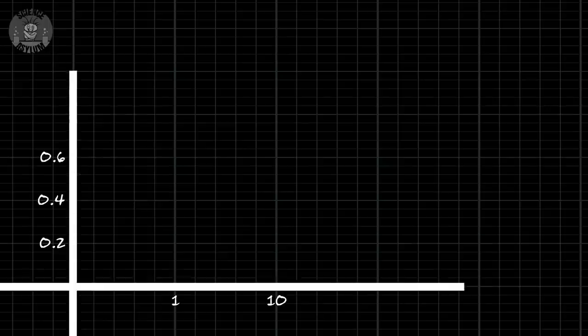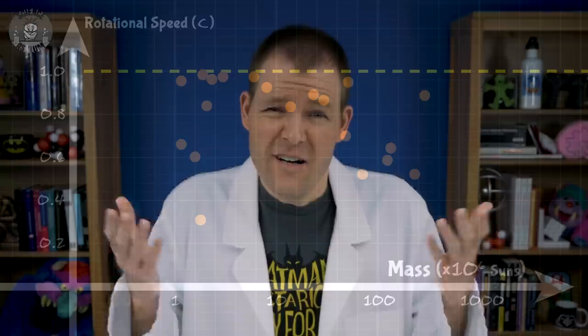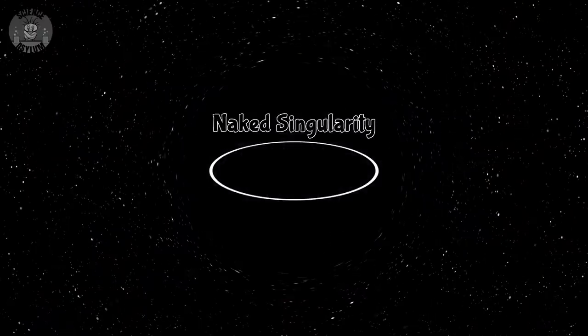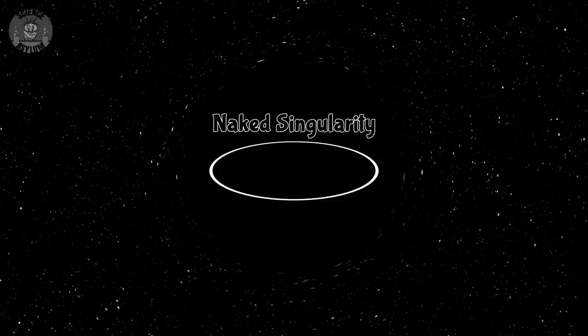There is an upper limit, though. They seem to max out at the speed of light, which makes sense since that's the universal speed limit. Also, if they spun any faster, the event horizon would disappear, exposing the physical singularity to the rest of the universe. It would be called a naked singularity — if it could happen. Which it can't. If you want to know more about how we actually measure this speed, Veritasium did a great video on this recently. I'm not going to talk about it — I'm not an experimentalist.